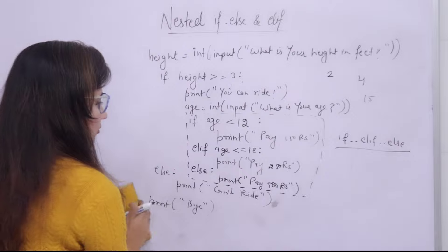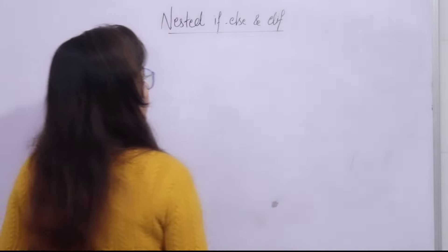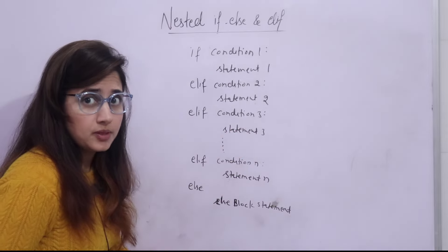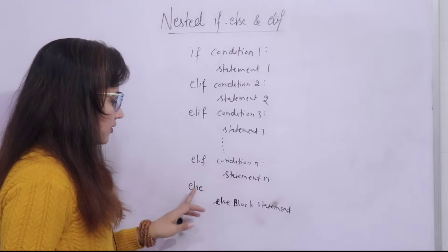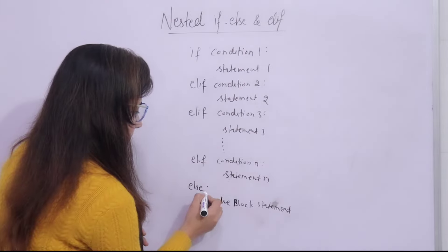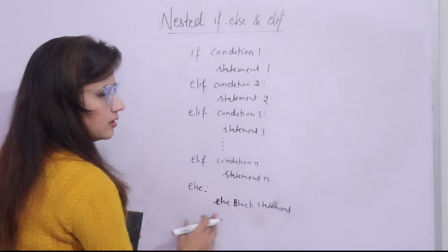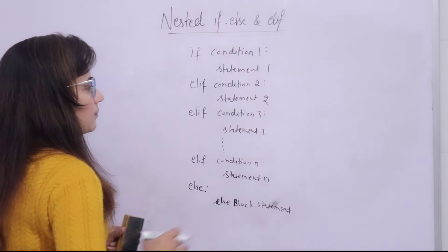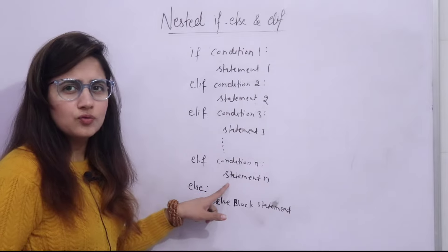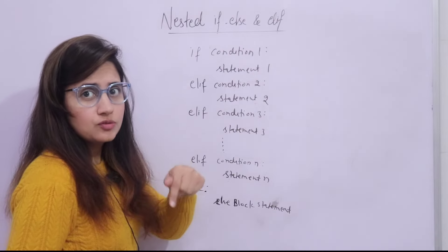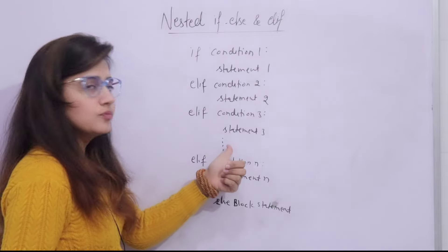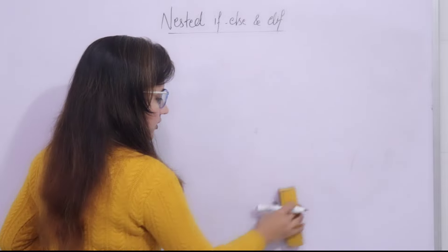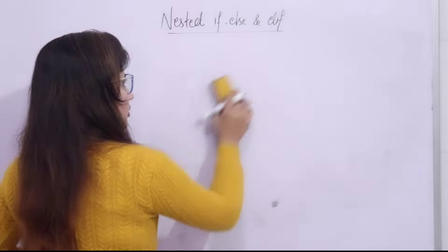The general syntax of elif is: if condition one, statement one; elif condition two; elif condition three — as many conditions as needed; then finally else with the else block statement. Whatever you write after the complete if-elif-else block will be executed afterward. A flowchart for this will be provided in the description, and you can also check the elif discussion from the C++ video.